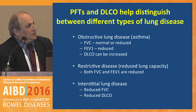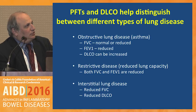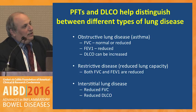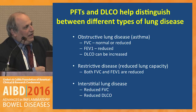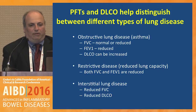These tests help distinguish between different types of lung disease. In obstructive lung disease like asthma, the lung tissue itself is fine so vital capacity is normal, but the airways are narrow so FEV1 is reduced - and paradoxically, DLCO can actually be increased. In restrictive disease like emphysema, both vital capacity and FEV1 are reduced. For interstitial lung disease, you get reduced vital capacity but also decreased ability for carbon monoxide to diffuse.